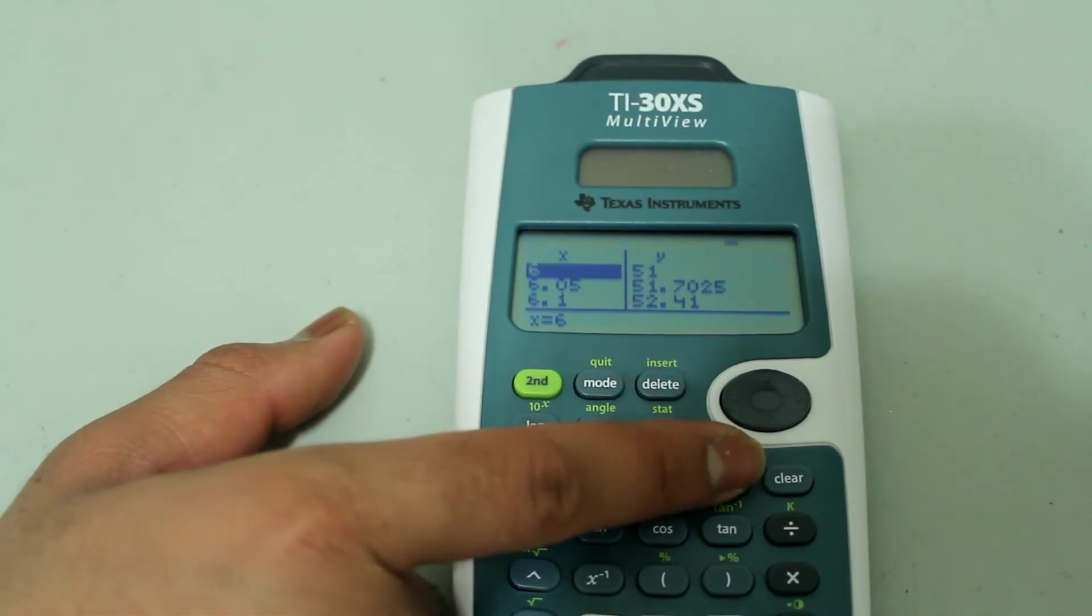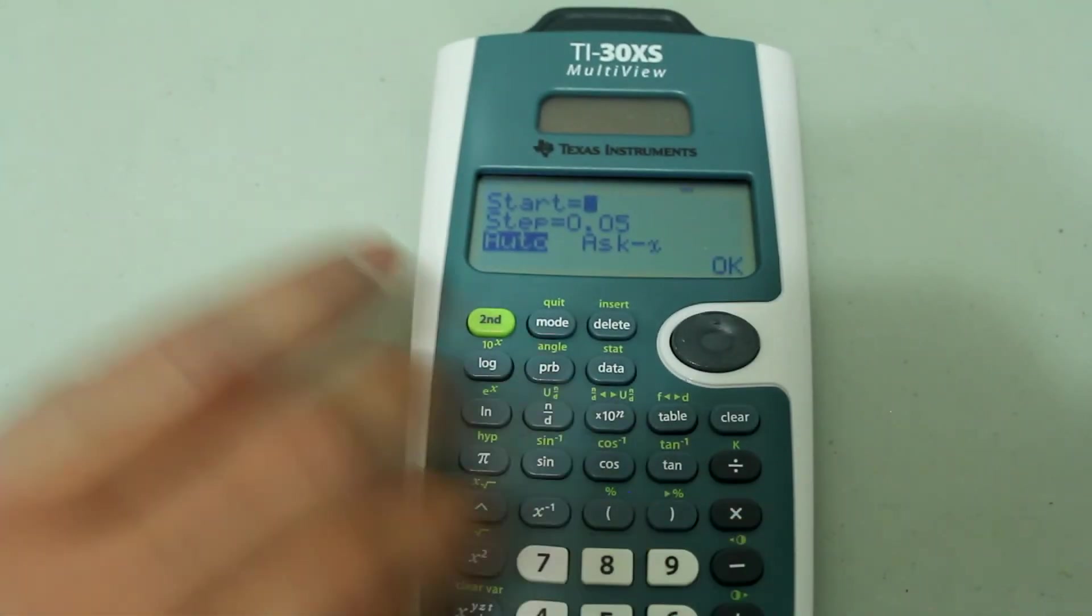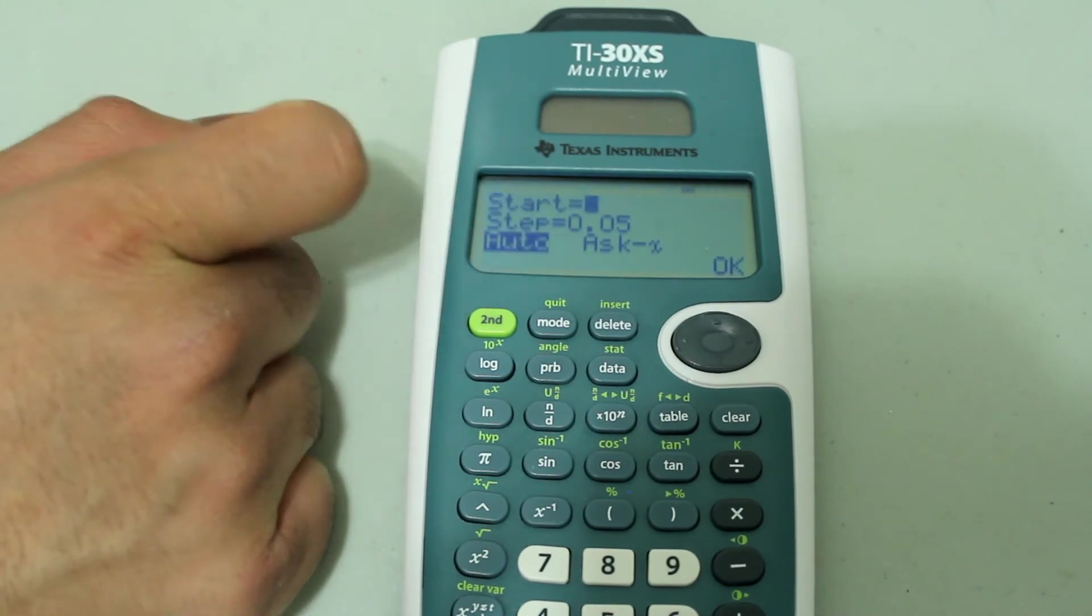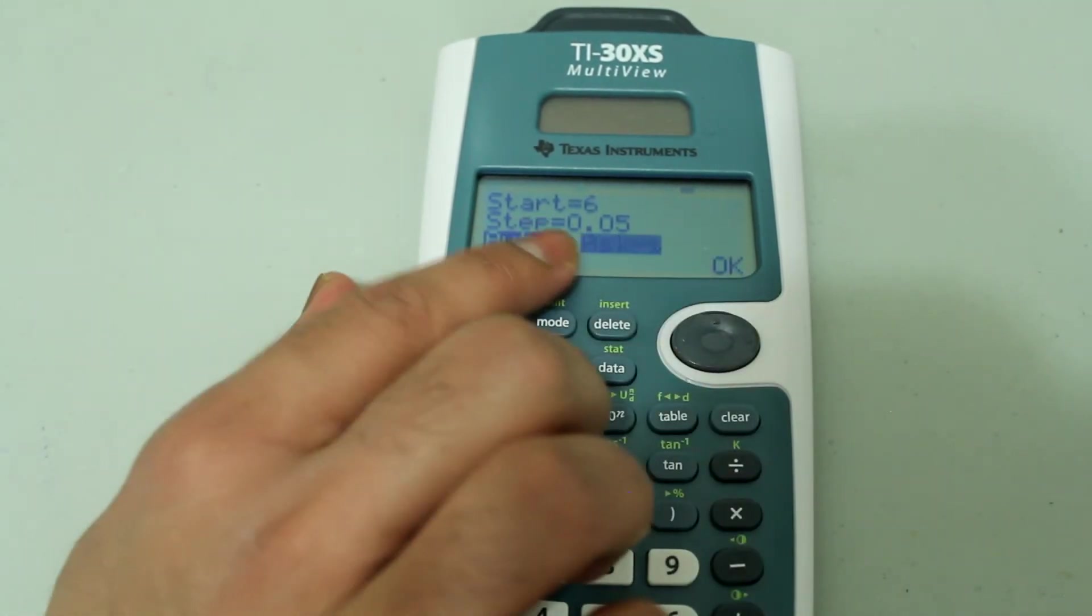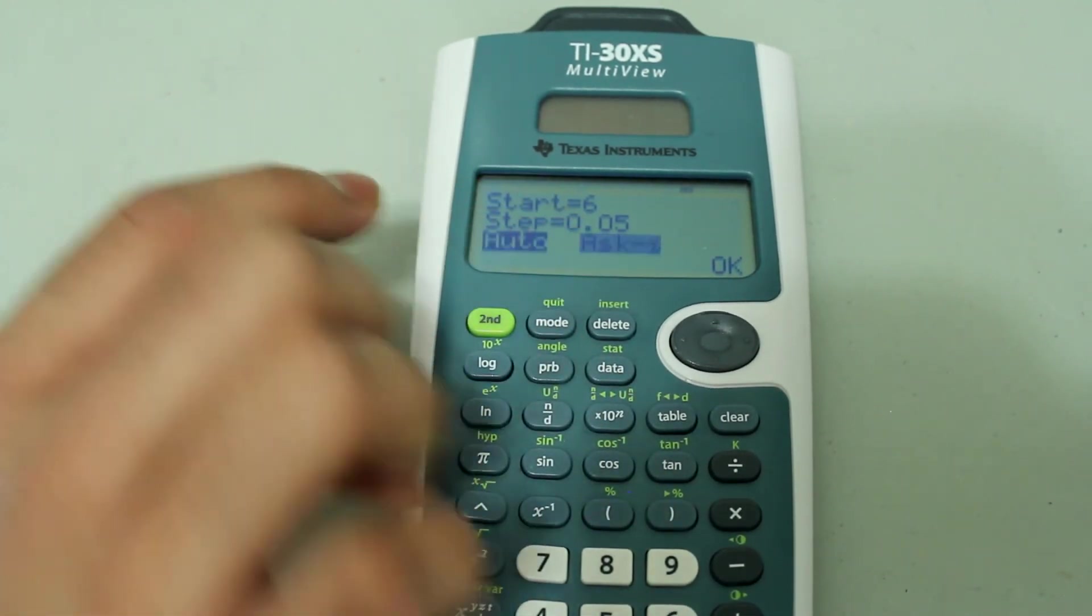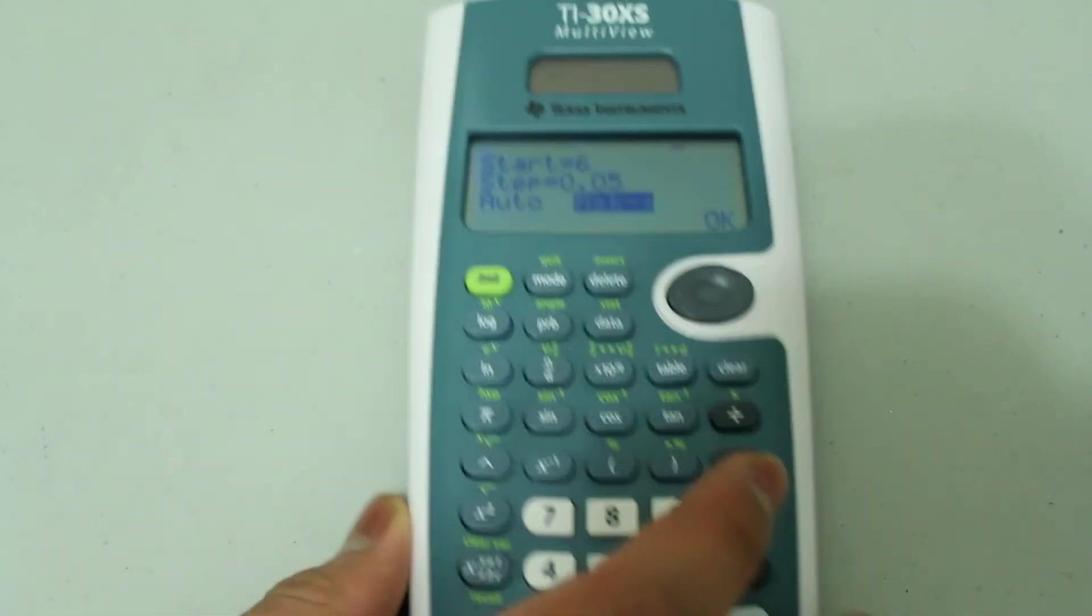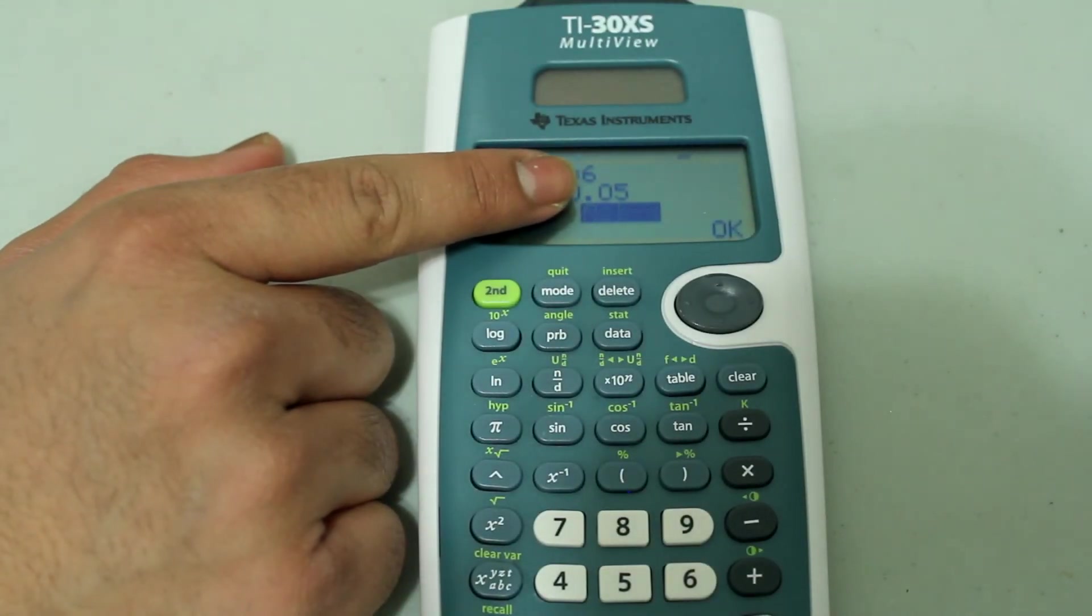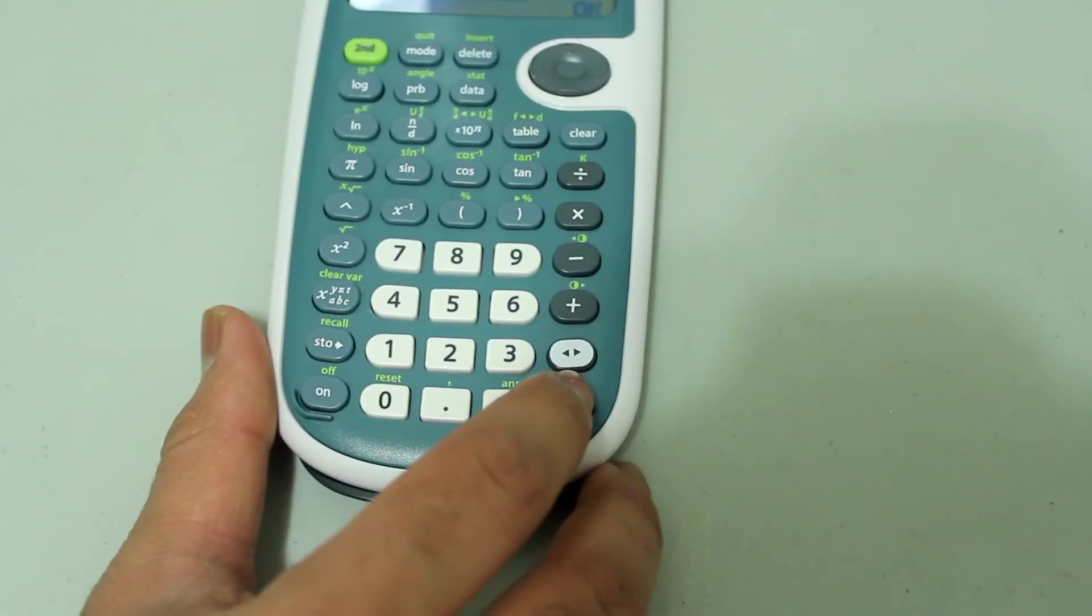I'm going to go back to the table option one more time. You might be wondering what the ask-x does, so we're actually going to see what that does. Arrow down until the cursor is blinking on the ask-x, then press enter. When ask-x is selected, arrow down and press enter when the cursor is blinking on OK.